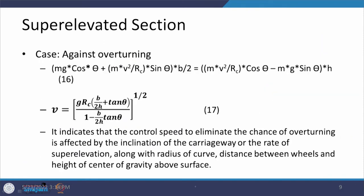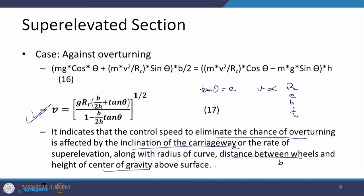Rearranging this equation, the control speed V for the overturning condition is: V = √[G·RC·(b/2H + tanθ) / (1 − (b/2H)·tanθ)]. The control speed to eliminate the chance of overturning depends on: the inclination of the carriageway E, the distance between the wheels B, the height of the center of gravity above the surface H, and the radius of the curve RC.